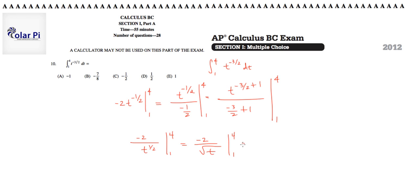And we know how to do this also. So that's plug in 4. So it's negative 2 over root 4. And then subtract, plugging in 1. So negative 2 over root 1.